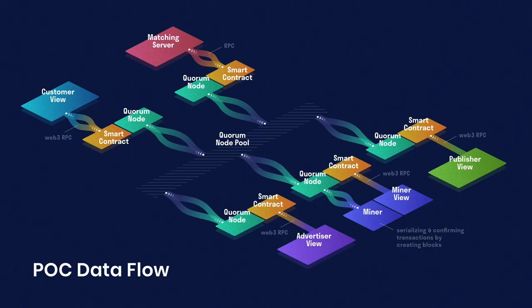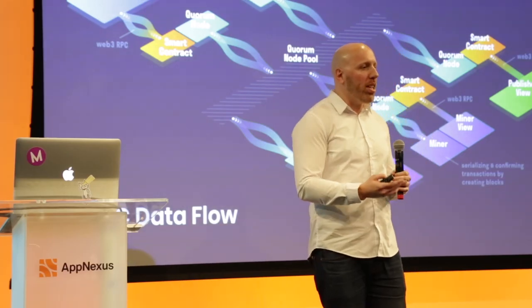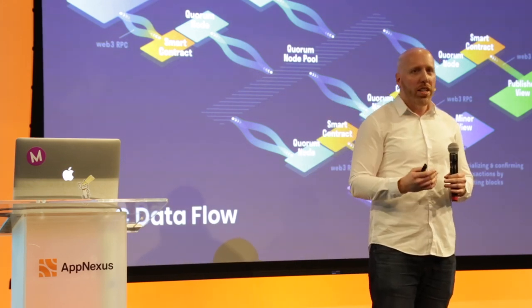Since we're here at a tech talk, let's dig into the tech. Ad serving on a blockchain is a little bit different. Really, what happens is lots of information needs to get written to the ledger. That information is mediated by smart contracts. When you're an advertiser and you want to put your campaign data into the ledger, you write that into a smart contract.